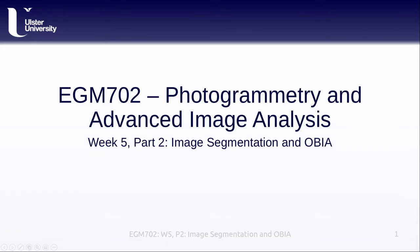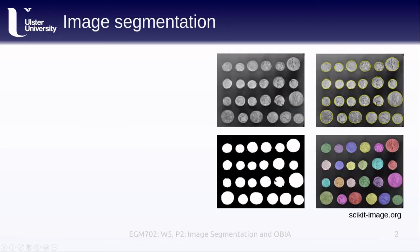Welcome to EGM 702, Week 5, Part 2: Image Segmentation and Object-Based Image Analysis. One of the tasks we are often interested in, in image processing and remote sensing, is identifying objects or features in an image. This example from scikitimage.org shows a collection of coins on a black background, and we might be interested in identifying or pulling out information about each of the different coins in the image.